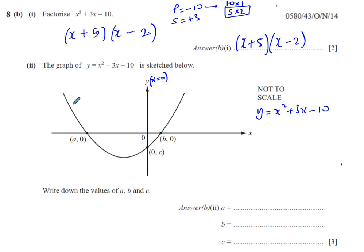So to find where this curve passes through y axis, you can substitute x = 0 into this equation. So y = 0² + 3 times 0 - 10, which gives you negative 10. So we know that the value of c must be negative 10. That's the y intercept.